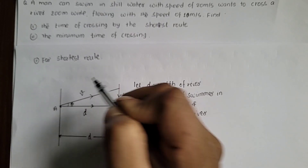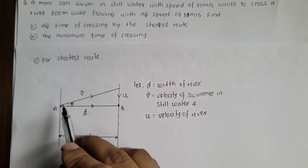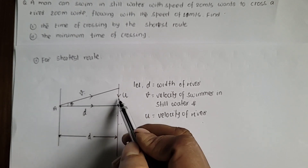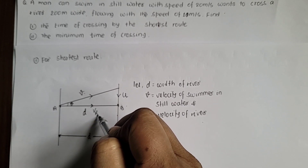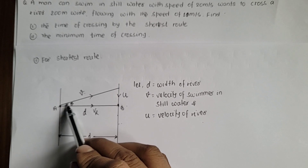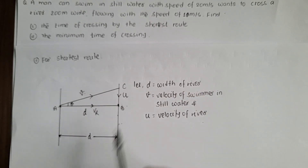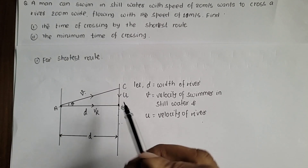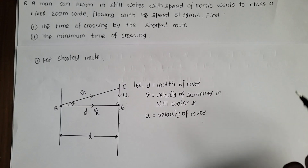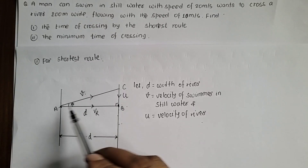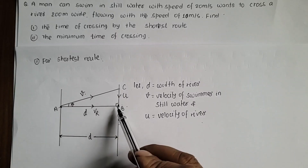The swimmer moves with velocity V in an upstream-angled direction. The river flows with velocity U downward. Under this condition, if the swimmer angles correctly, the resultant velocity with respect to the river (Vr) points directly from A to B. So the swimmer's direction must be set such that the resultant displacement is exactly along the width of the river — the shortest route.